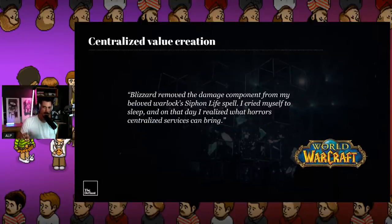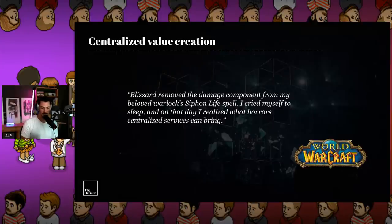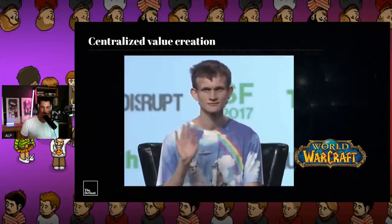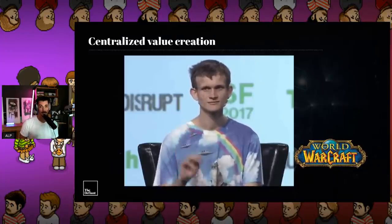Those digital items exist only within those games. If Fortnite shuts down, all the value people have acquired disappears overnight. One person put it perfectly: 'Blizzard removed the Damaged component from my beloved Warlock's Siphon Life spell. I cried myself to sleep. And on that day I realized what horrors centralized services can bring.' Who was this person? Vitalik Buterin — the person who has done more than almost anyone to promote decentralized value creation in blockchain.